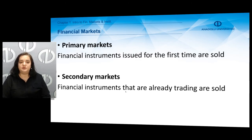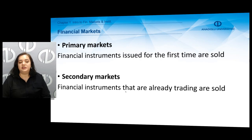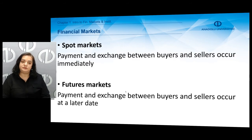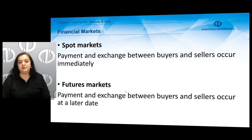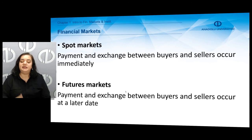Another classification of financial markets is primary versus secondary. In primary markets, financial instruments that have been issued for the first time are sold and bought, while in secondary markets, financial instruments that are already trading are bought and sold. Another classification is spot markets versus futures markets. In spot markets, payment and exchange between buyers and sellers occur immediately, whereas in futures markets, payment and exchange occur at a later date.